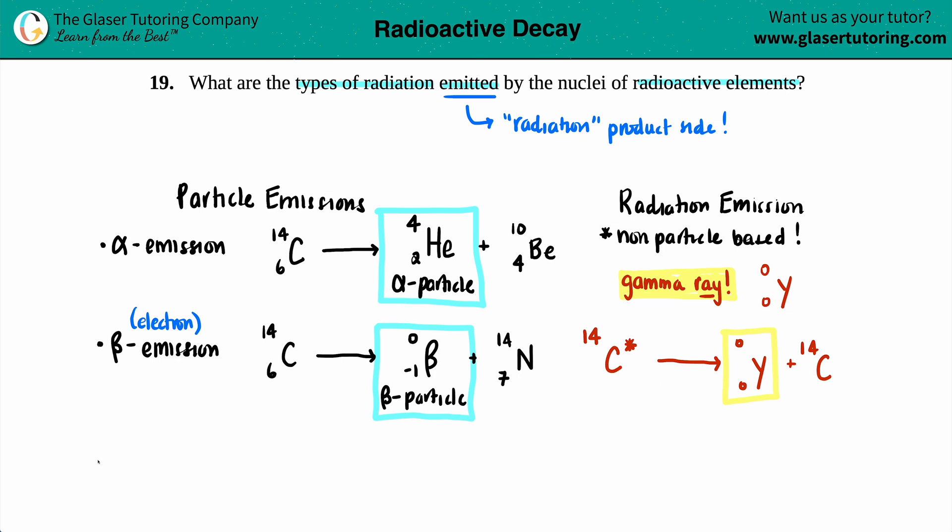We have the opposite of a beta emission, which is positron emission. This is basically an anti-electron where you would still use the same notation, and it's still being emitted. So the beta is going to be on the product side. But instead of being a negative one on the bottom, it's going to be a plus one, and a zero on the top.